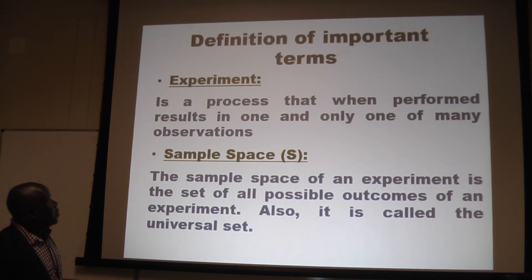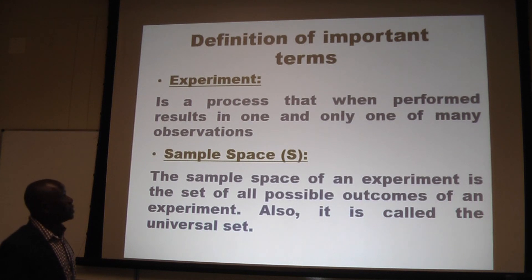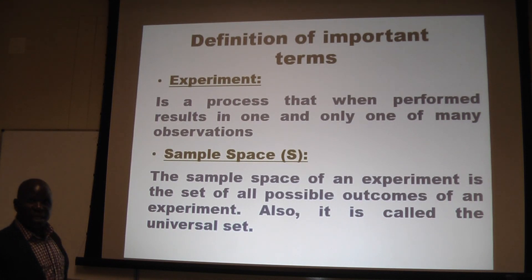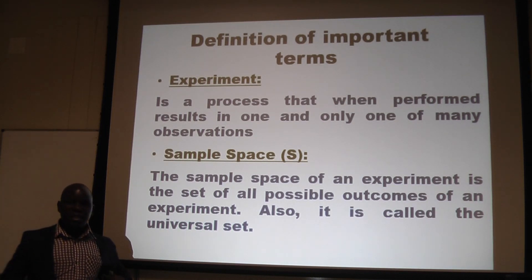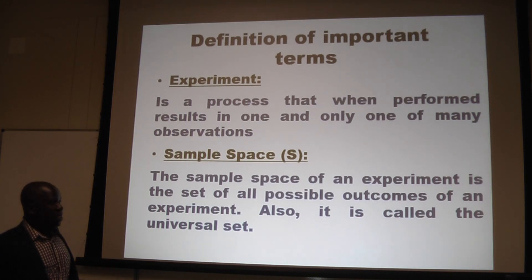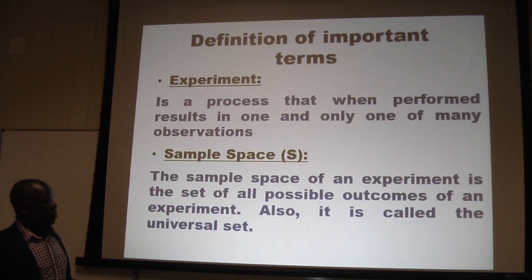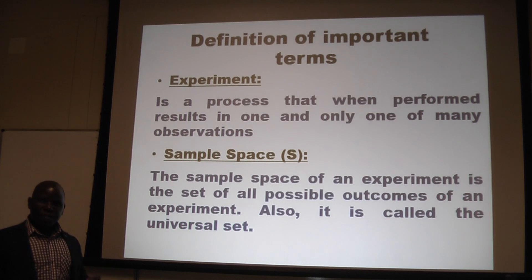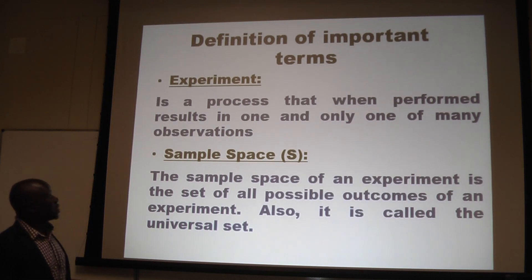Now I want us to go through important terms that are linked to probability. The first term is experiment. An experiment is basically the process which, if you perform it, will result in one and only one of a number of observations being observed. For example, if you flip a coin once, it's either you obtain a head or a tail. If a head appears, we call that an outcome; if you get a tail, we call that an outcome. That is an experiment.